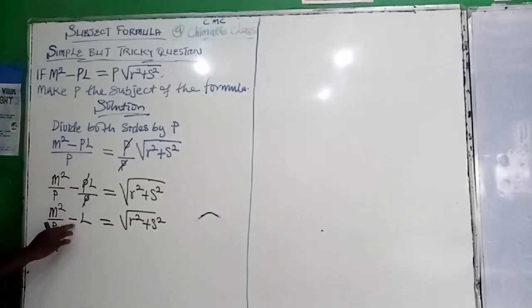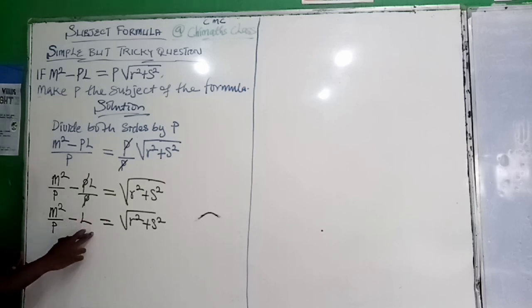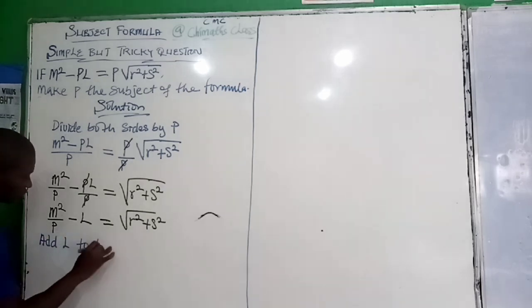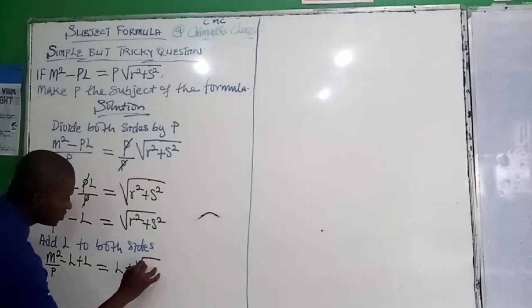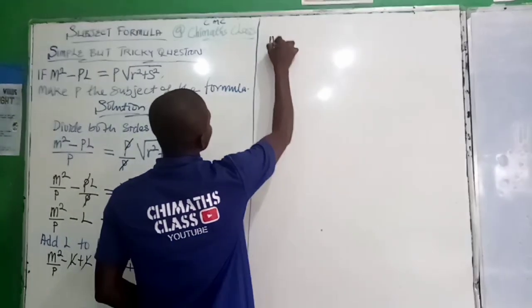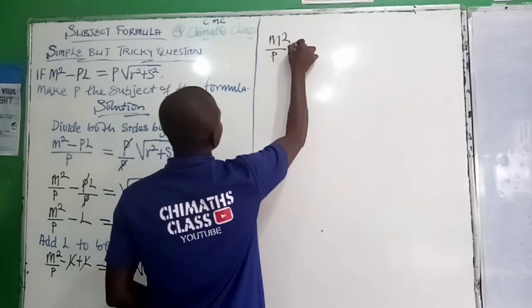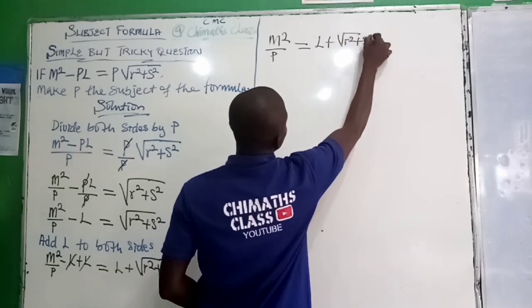Since we want to make P the subject of the formula, we will add L to both sides so that we will be having only P. So we will add L to both sides. Add L to both sides so that we have M squared minus L plus L over P is equal to L plus the root of R squared plus S squared. So that we have M squared over P is equal to L plus the root of R squared plus S squared.